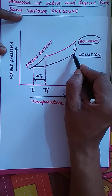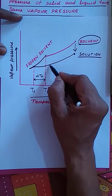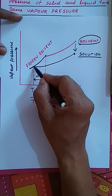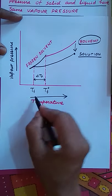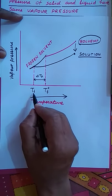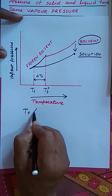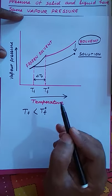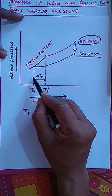After decreasing the temperature of the solution, its vapor pressure also decreases and reaches the curve of frozen solvent at a temperature Tf. We observe that Tf is less than T°F — there is depression in freezing point. For example, water freezes at 0°C, but after adding a non-volatile solute like NaCl, its melting point decreases below 0°C.